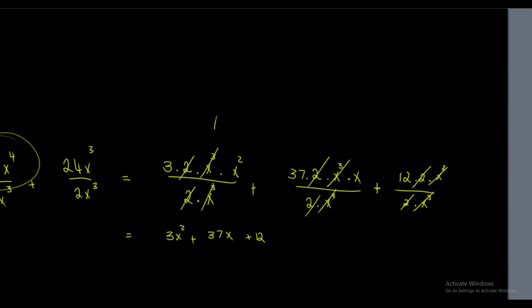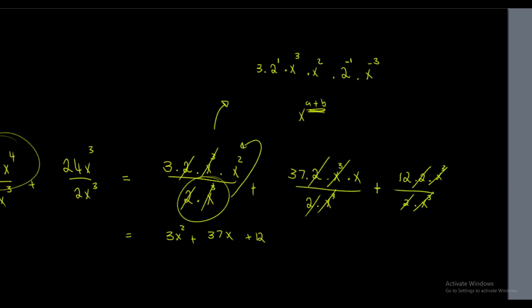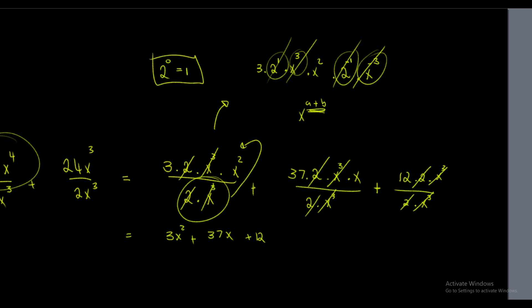In theory, this is what it would look like: 2 times 2 to the power of 1 times x to the power of 3 times x to the power of 2, over 2 times x to the power of 3. To take something from a denominator to a numerator, you flip the exponent. When exponents multiply, they add together — very important. When exponents divide, they subtract. So 3 plus negative 3 is 0, they cancel. And 2 times 2 to the power of negative 1 gives 2 to the power of 0, which equals 1 — another exponential rule.